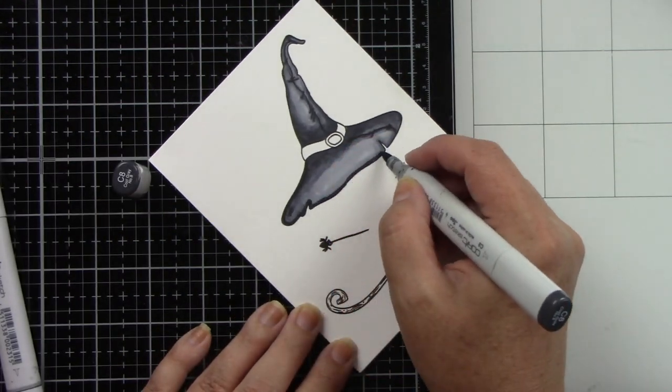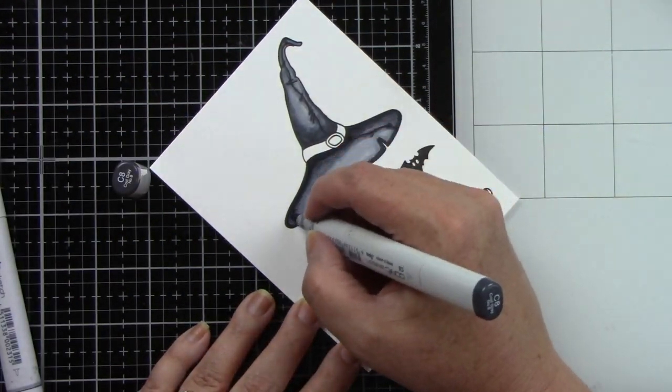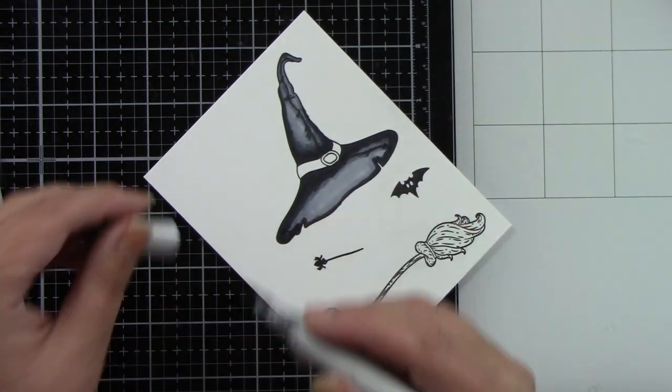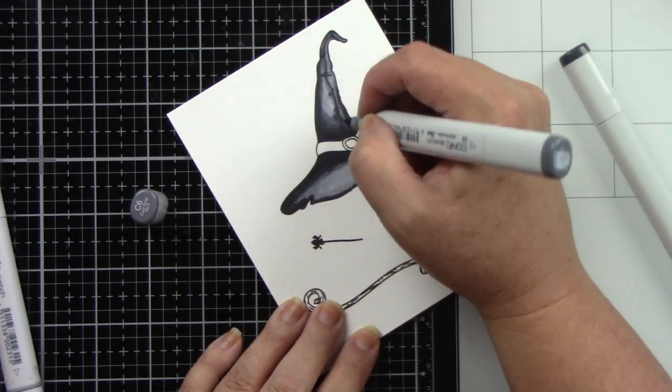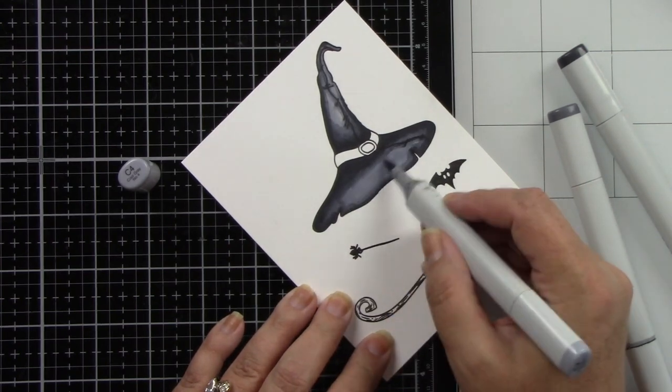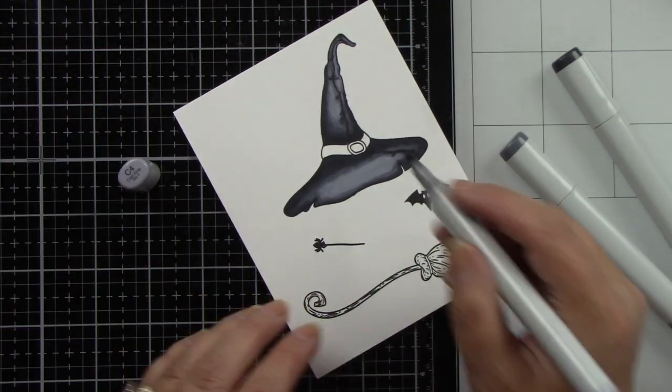I didn't love the brim of the witch's hat at first, so I brought back the C8 and traced around the front, which made a huge difference. I like to blend a couple times, so it was perfect to come back and blend a whole second time.